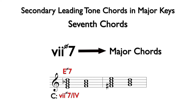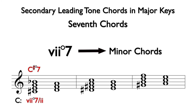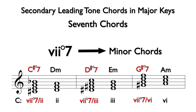Here we have the seven half-diminished seven of four and the seven half-diminished seven of five with their chords of resolution. Since the leading tone chord in a major key is seven half-diminished seven, this chord reflects the sound of the major tonality, and therefore a seven half-diminished seven is an appropriate secondary leading tone chord to a major chord that is not one. Since fully diminished seventh chords come from the minor tonality, they logically lead to minor chords. Here we have the seven fully diminished seven of two, the seven fully diminished seven of three, and the seven fully diminished seven of six, along with their chords of resolution.